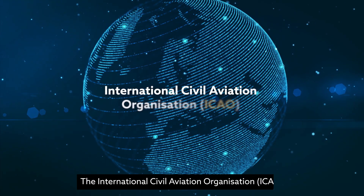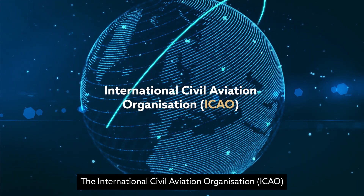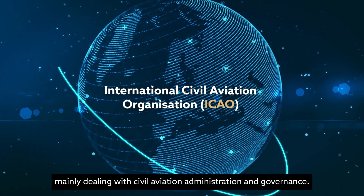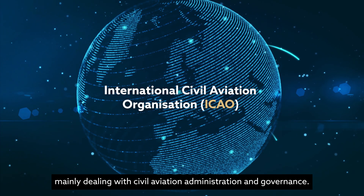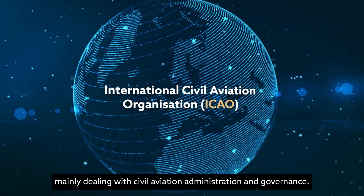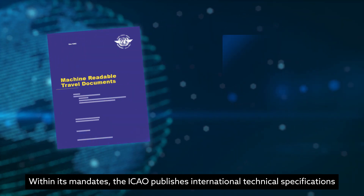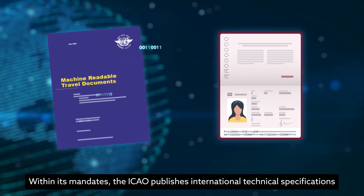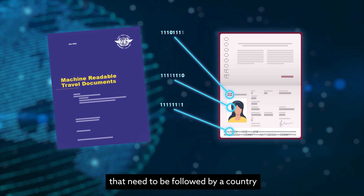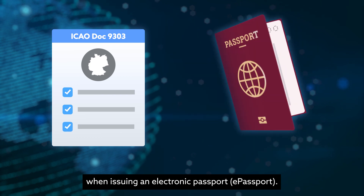The International Civil Aviation Organization, ICAO, is a United Nations specialized agency mainly dealing with civil aviation administration and governance. Within its mandates, the ICAO publishes international technical specifications that need to be followed by a country when issuing an electronic passport.